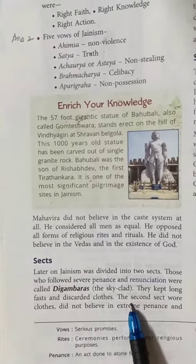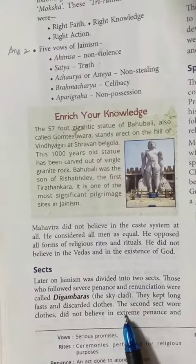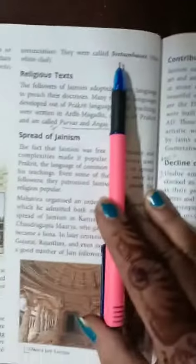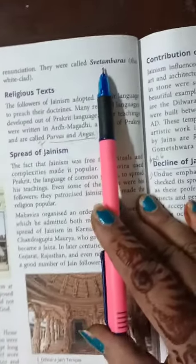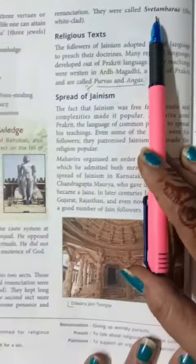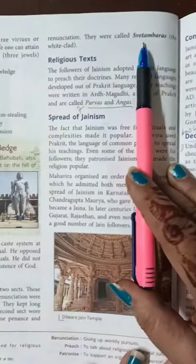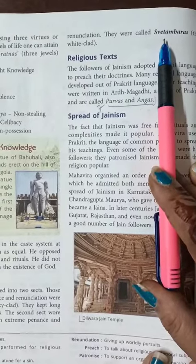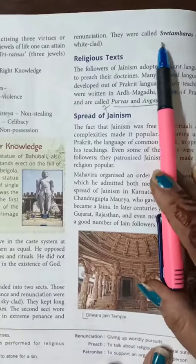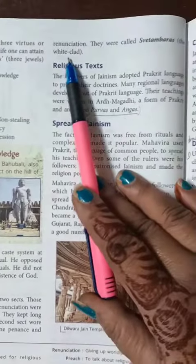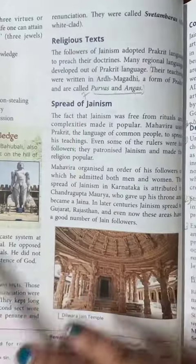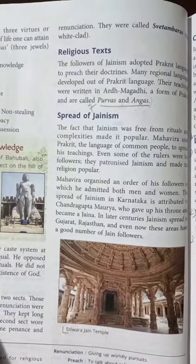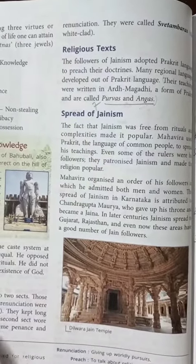The second set was known as Shvetambara. These were the people who did not believe in extreme penance and renunciation. They were known as white-clad, and the Digamaras were known as the sky-clad.